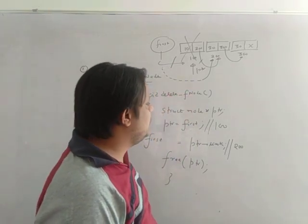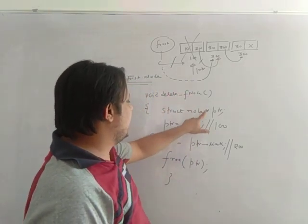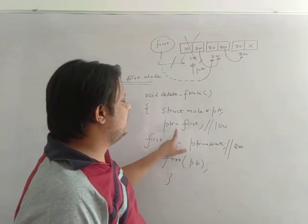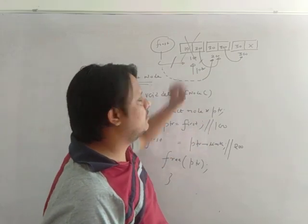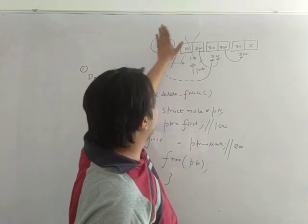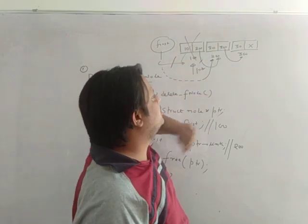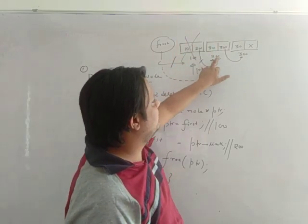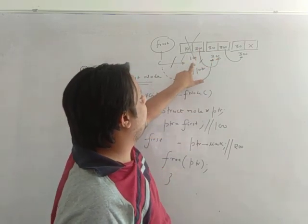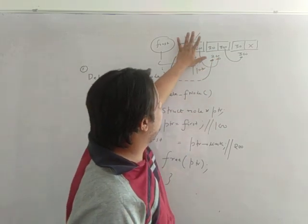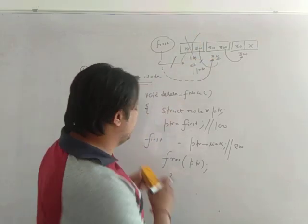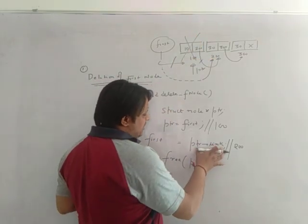So to recap: I take a pointer ptr and assign it the address of the first node. When I write ptr equals first, ptr is pointing at 100. If I want to delete this node, first should point to the next node. The address of the next node is 200, and 200 is the link of ptr. So after deletion, first should point to 200. I write ptr arrow link — this is 200 — and assign it to first.